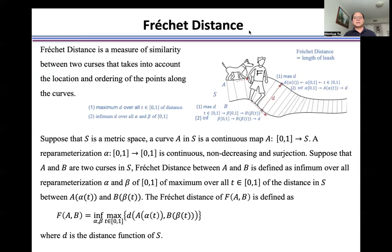Fréchet distance is a measure of similarity between two curves that takes into account the location and ordering of the points along the curves.